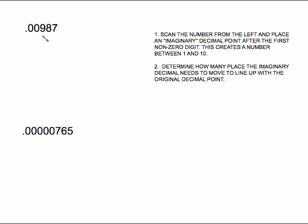We also have to deal with small numbers. 0.00987 is a very small number. We still scan in from the left, but we're looking to put our imaginary decimal after the first non-zero digit, so we skip the zeros. Here's my first non-zero digit — I put my imaginary decimal right there, which creates 9.87 as my first number, times 10 to some power. This time the decimal point is already visible at the front. The imaginary decimal has to move past the 9 and past those two zeros — that's three places to the left, which is a negative exponent.